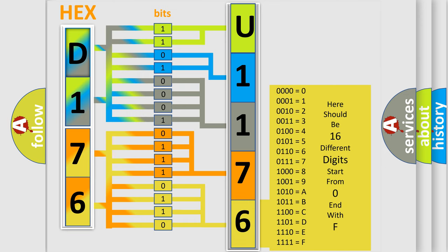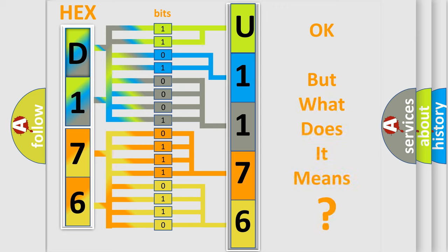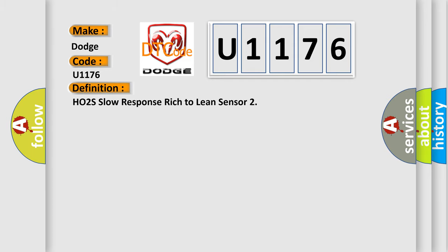We now know how the diagnostic tool translates received information into a more comprehensible format. The number itself does not make sense if we cannot assign meaning to what it actually expresses. So, what does the diagnostic trouble code U1176 interpret specifically for Dodge car manufacturers? The basic definition is: HO2S slow response rich to lean sensor.